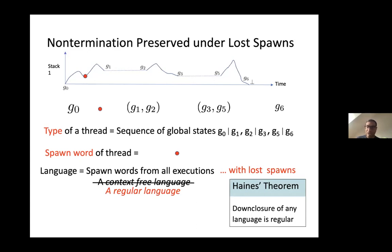This abstraction is called the downward closure abstraction. It allows you to replace the context-free language of a thread by a regular language, by Haines's theorem, which says the downward closure of any language is regular. For context-free languages, we can compute this. The key fact is the subword order is a well-quasi-order. When you lose spawns, the new system you get is a regular system.